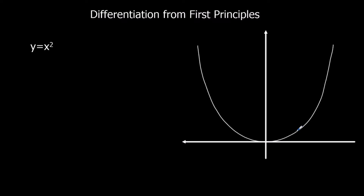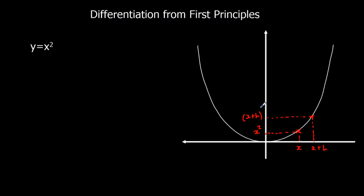So what we're going to do is take a point and say that the x-coordinate is x. That makes the y-coordinate x squared, so we have the point (x, x²). Then we're going to take a second point a little bit further along the graph, and we'll call this x plus h, which makes the y-coordinate (x+h) squared, because y equals the x-coordinate squared.